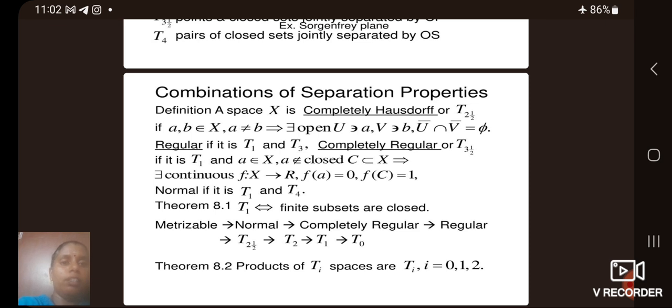Next, we see the regular and completely regular. The T1 and metrizable implies normal, and normal implies completely regular. Completely regular implies regular. That means T2 and a half implies T2 implies T1 implies T0. Thank you.